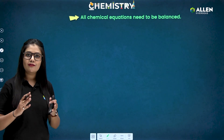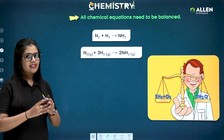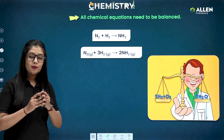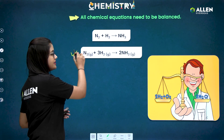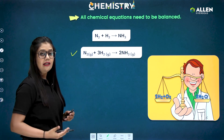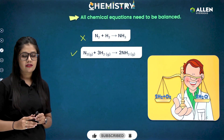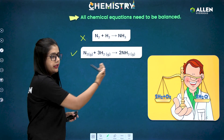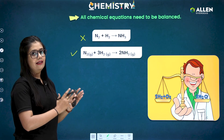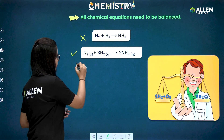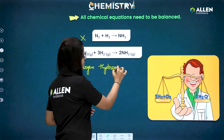Always balance every chemical equation you mention in the answer sheet, as examiners love balanced chemical equations. Write equations in their complete informative form, including the state of reactants and products. To make it more informative, you can mention the names of reactants and products below the equation — for example, nitrogen, hydrogen, and ammonia.